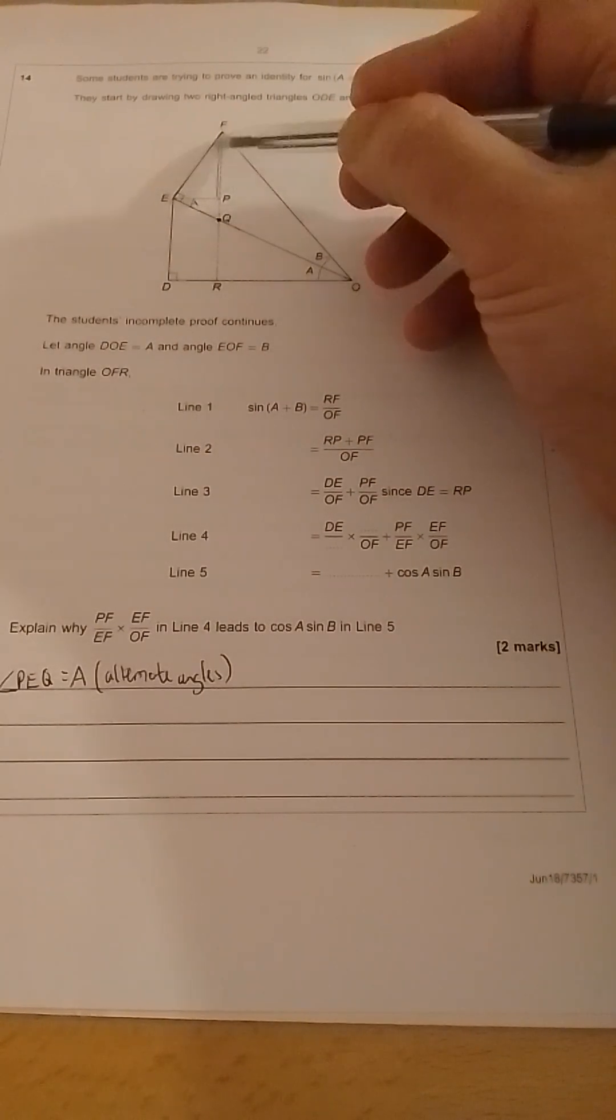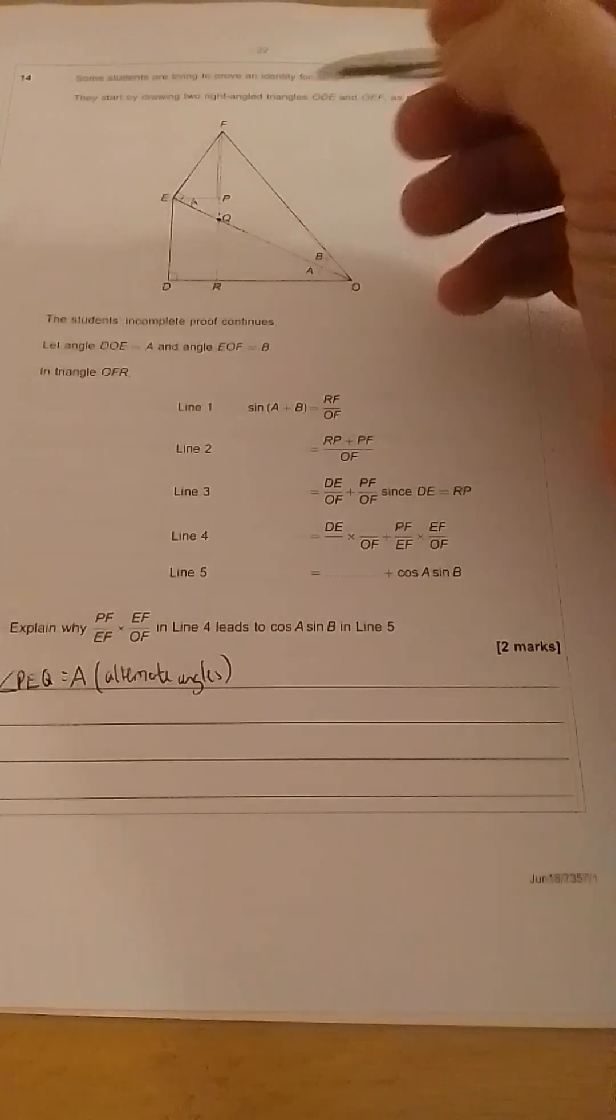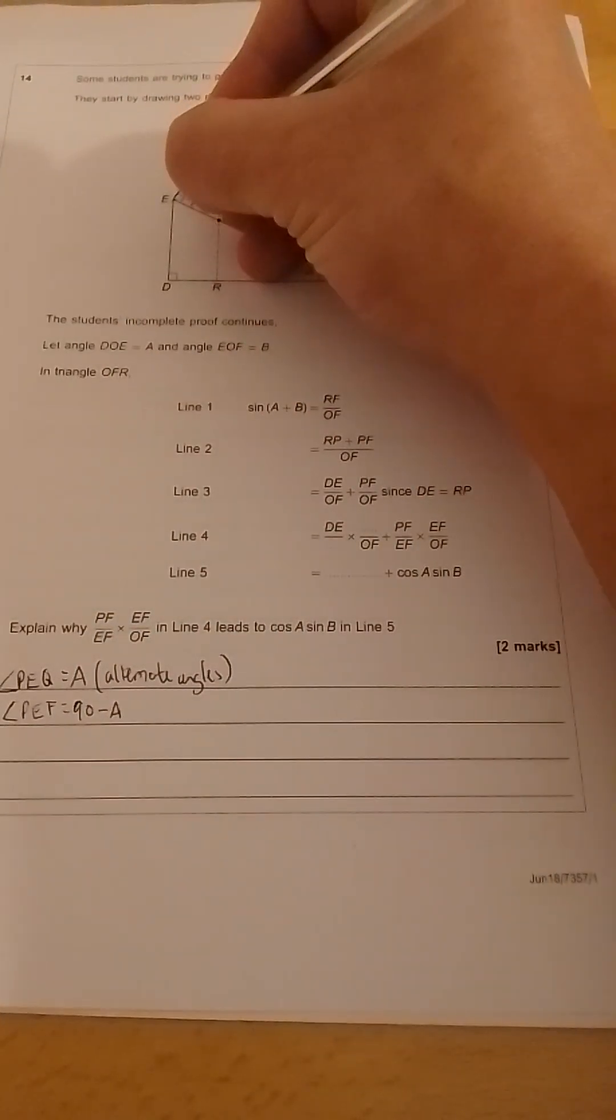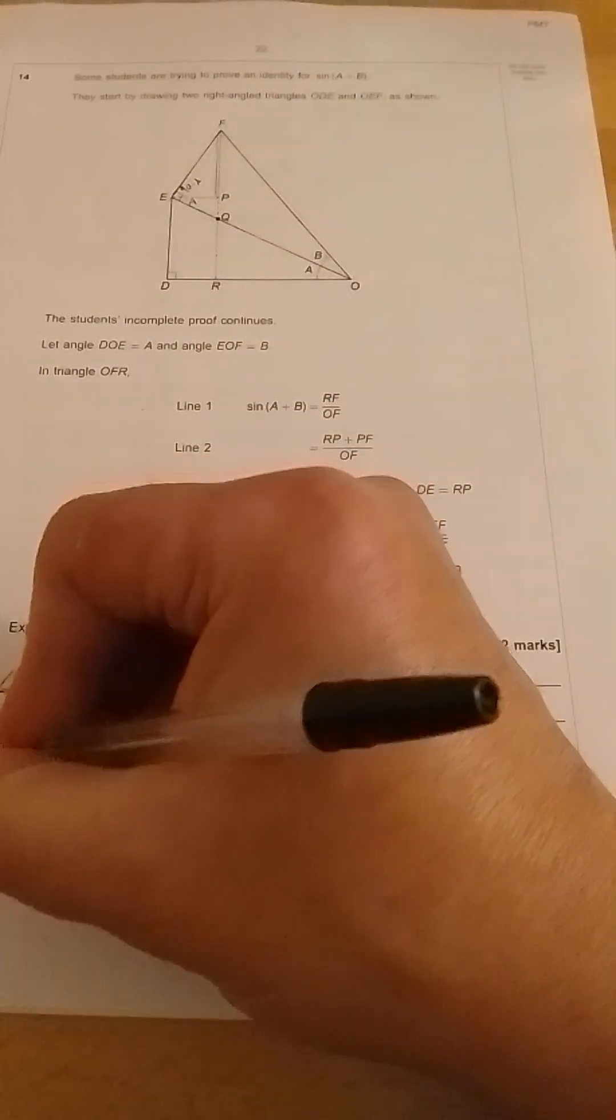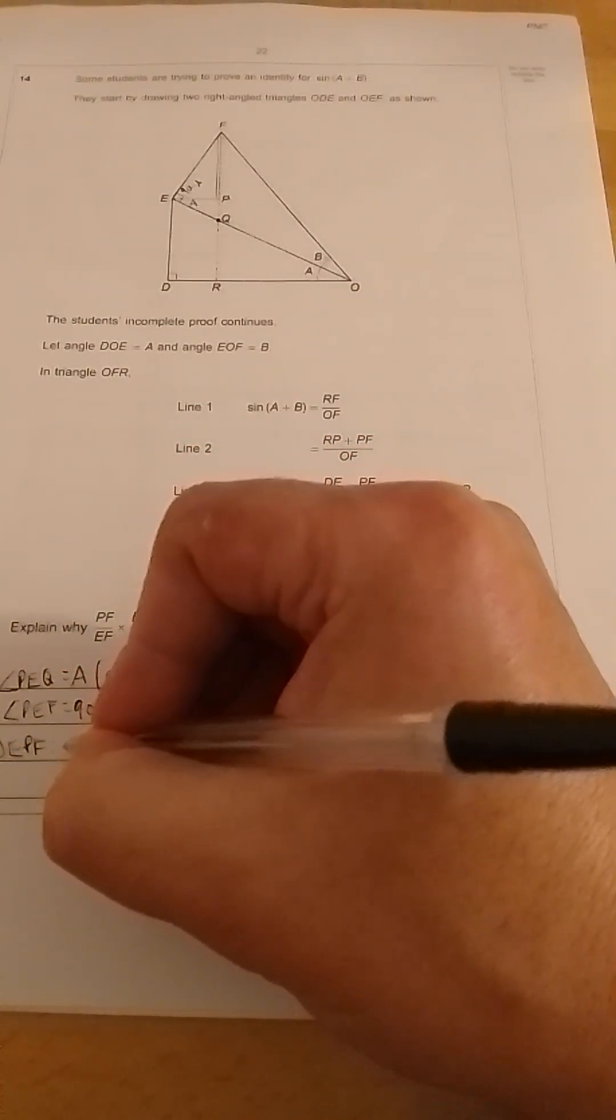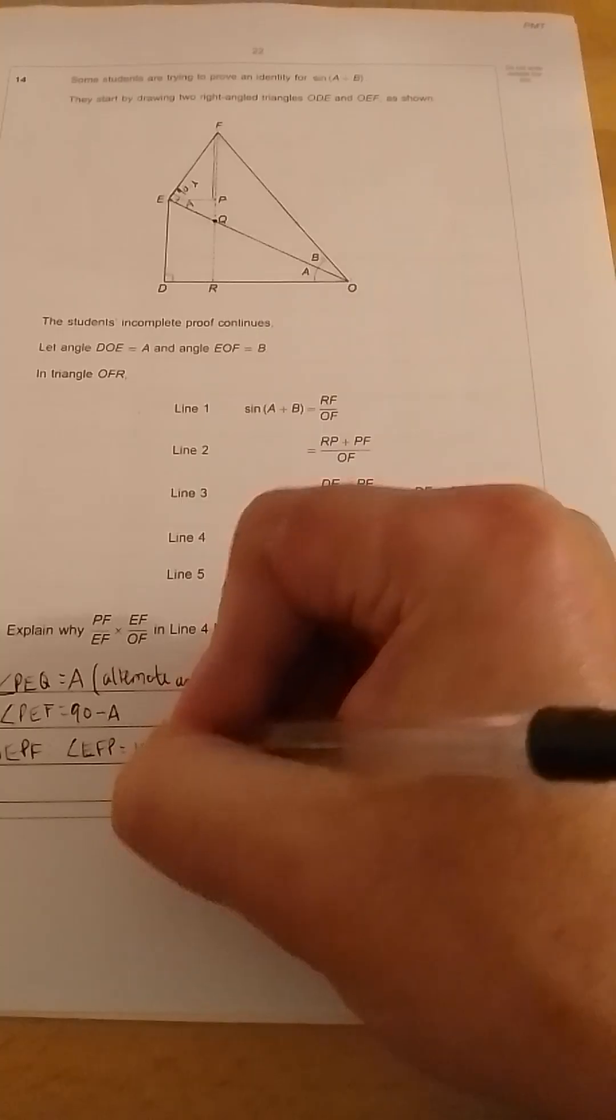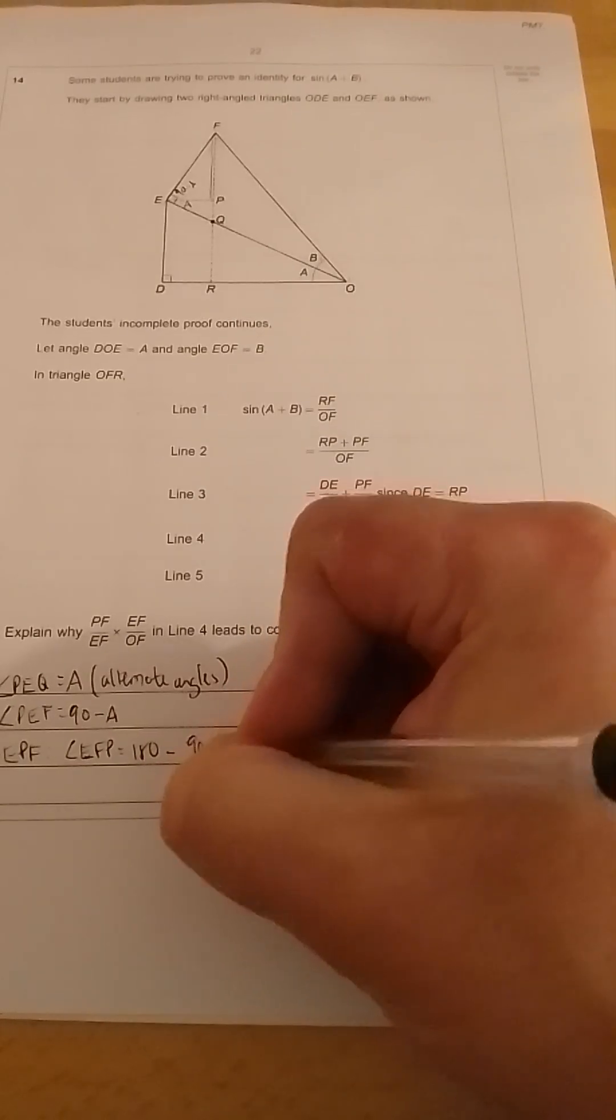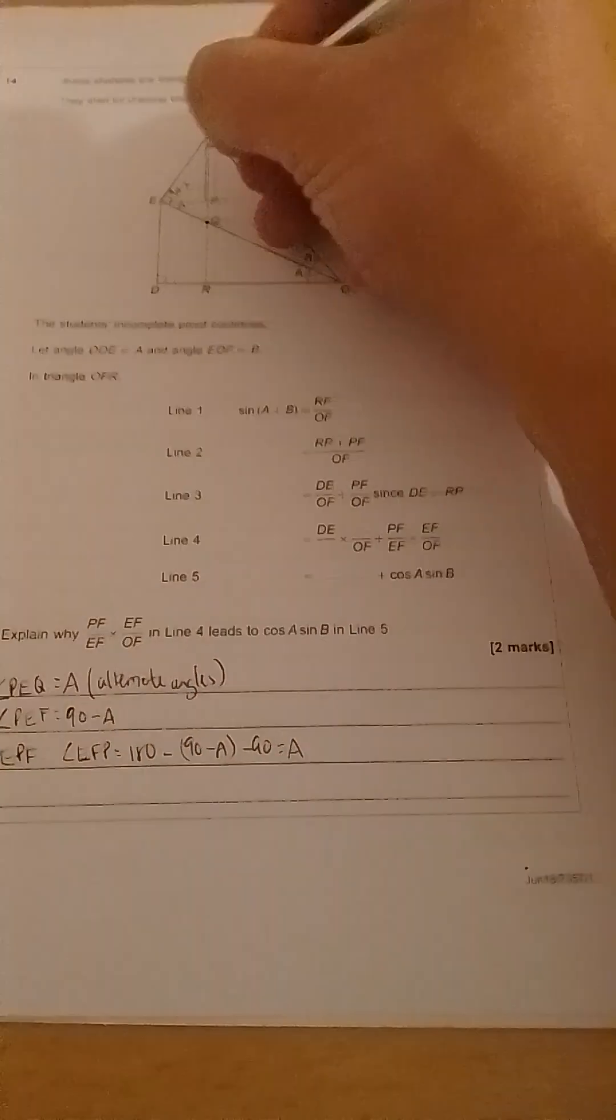Now we have a right-angled triangle, and if we look at the right angle, we can see that angle PEF is equal to 90 minus A. So this angle here is 90 minus A. And now if we look at triangle EPF, we can see that angle EFP, the top angle at the top here, is equal to 180 minus 90 minus A, minus the 90 degrees here, which is A. So this angle at the top is A.